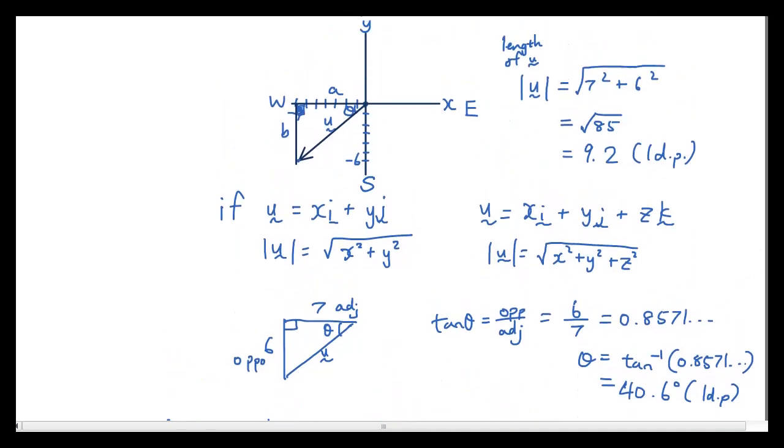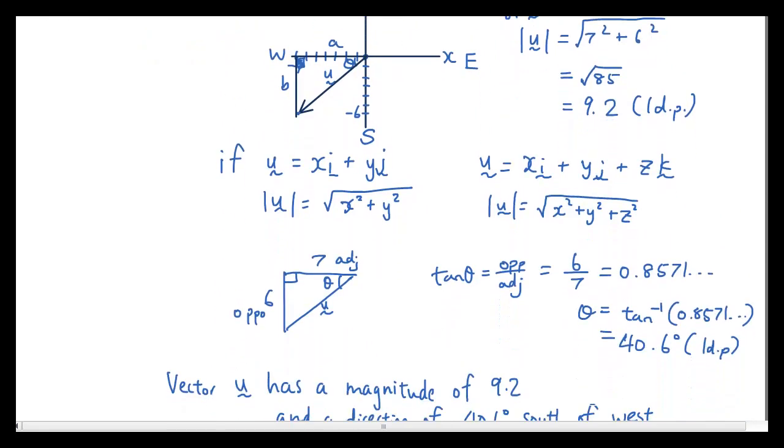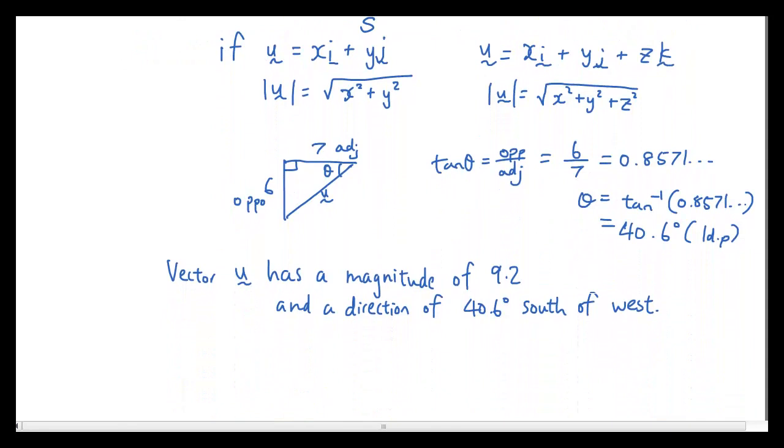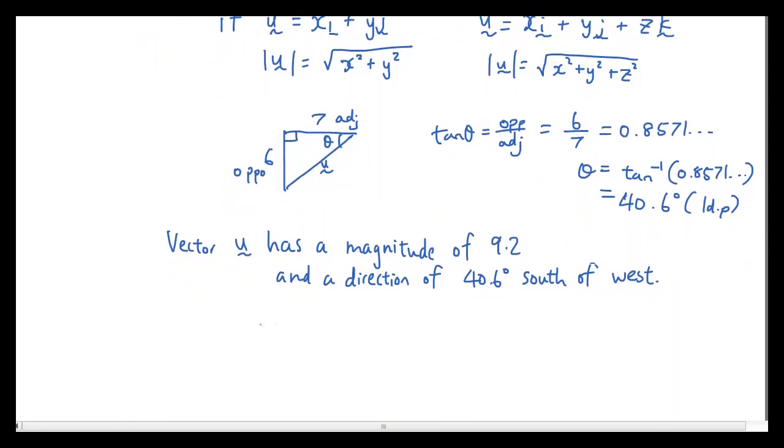So that's how you find the bearing of a vector. Now if you want a general formula, so if u is equal to xi plus yj, then I would say theta, which is the direction, sorry, the angle...